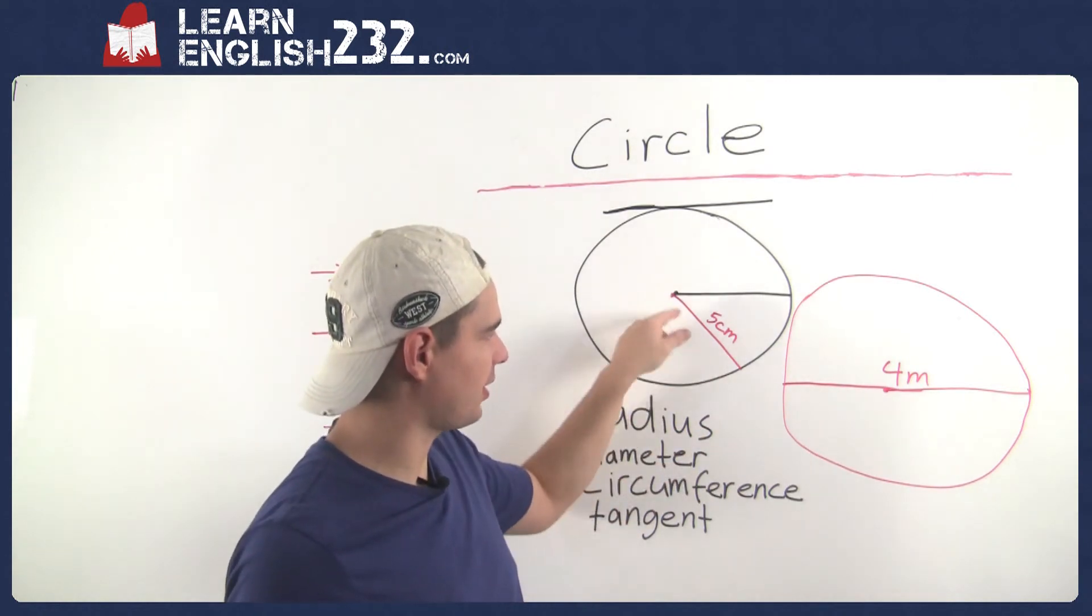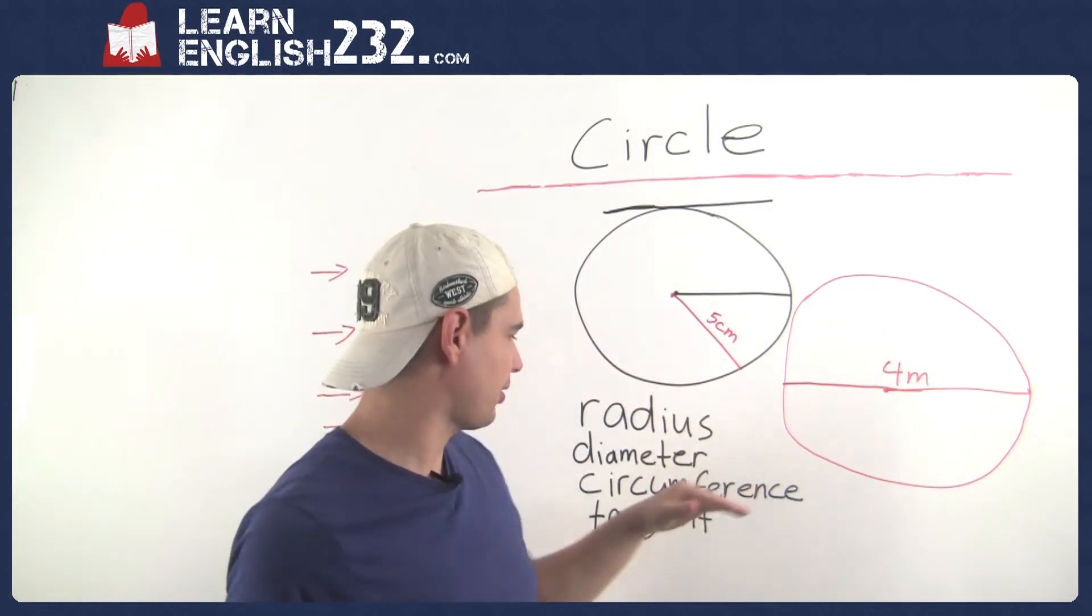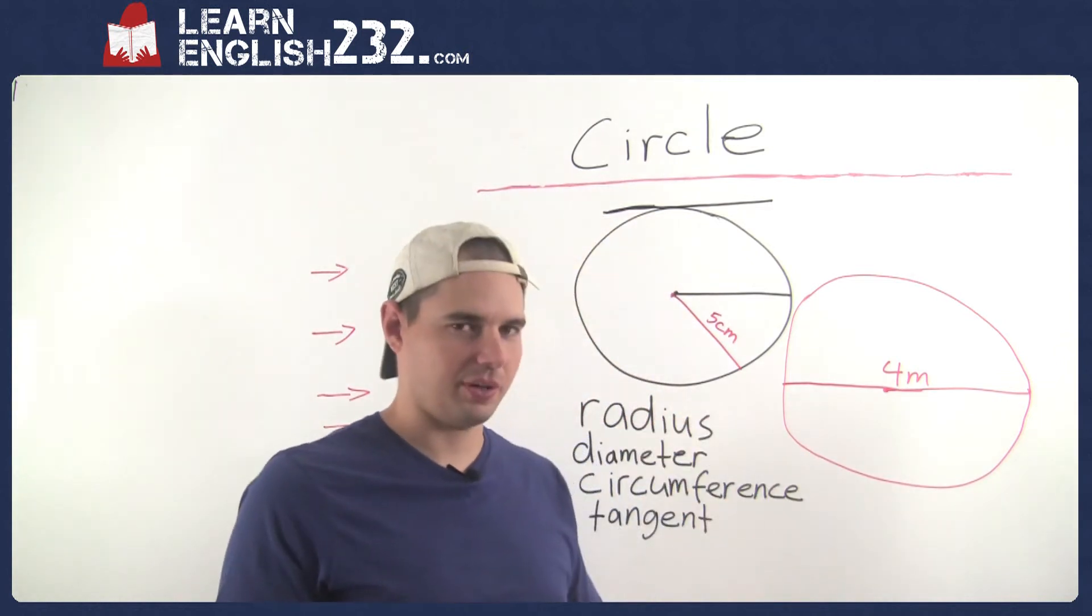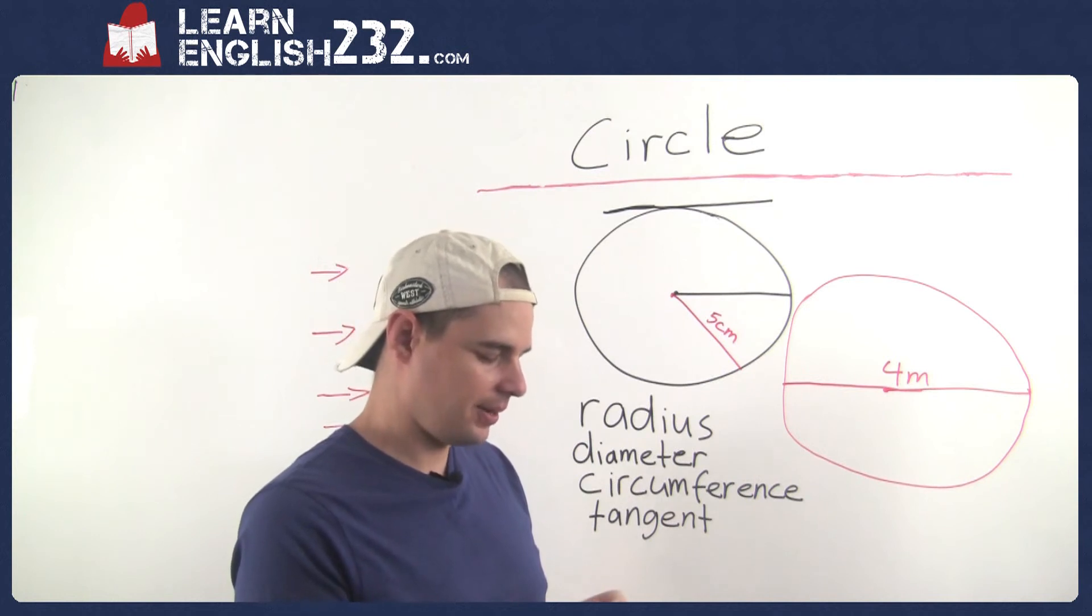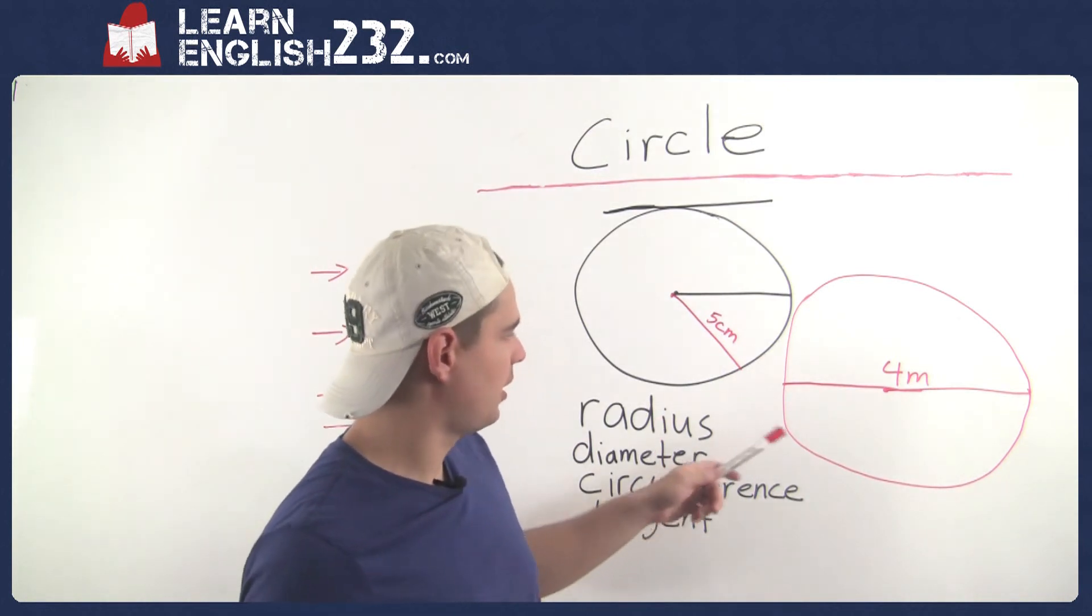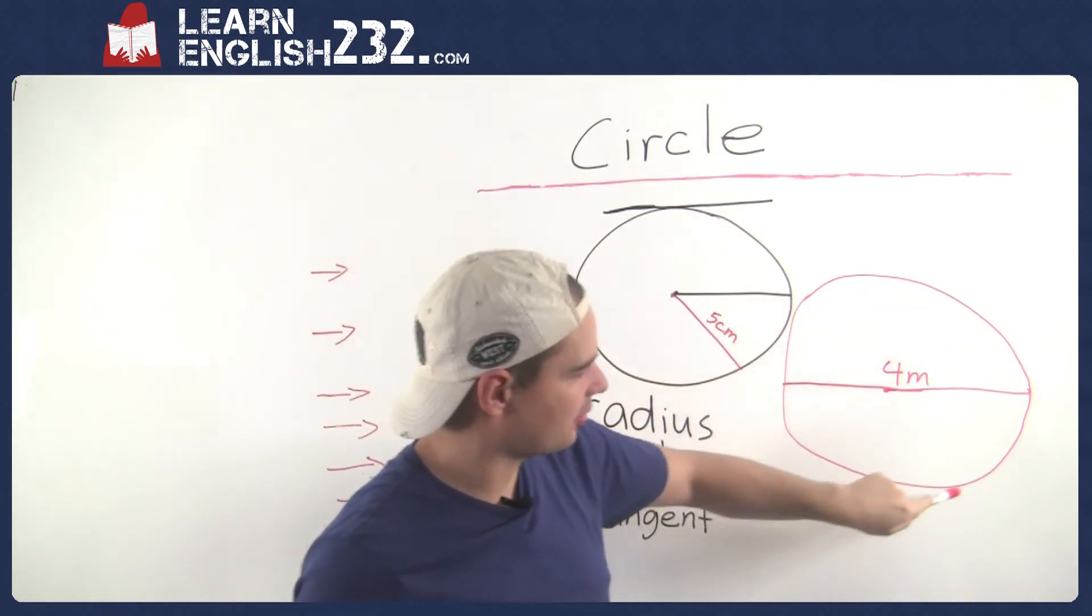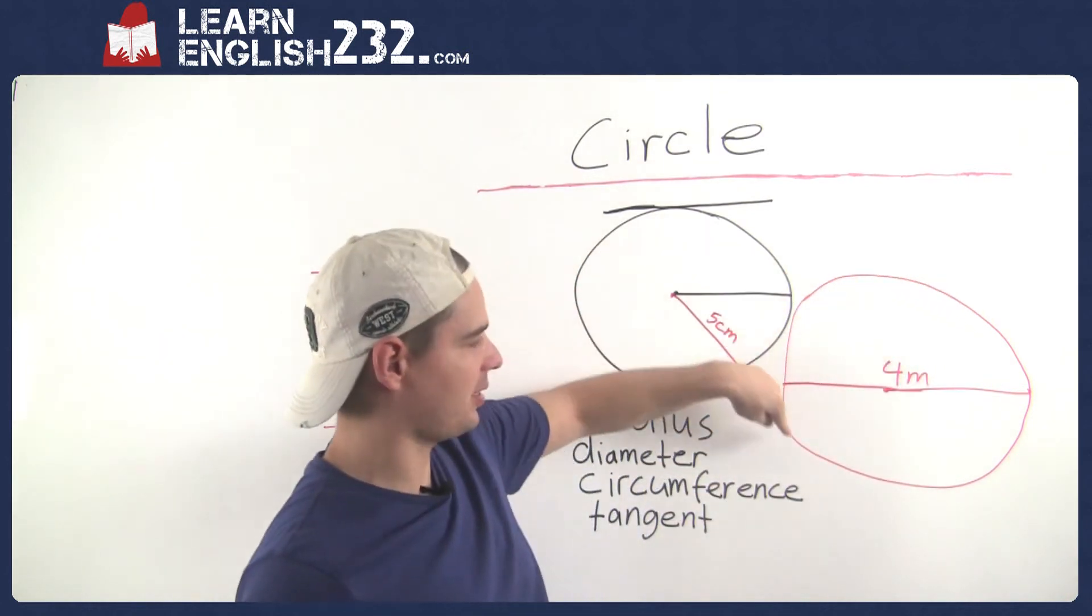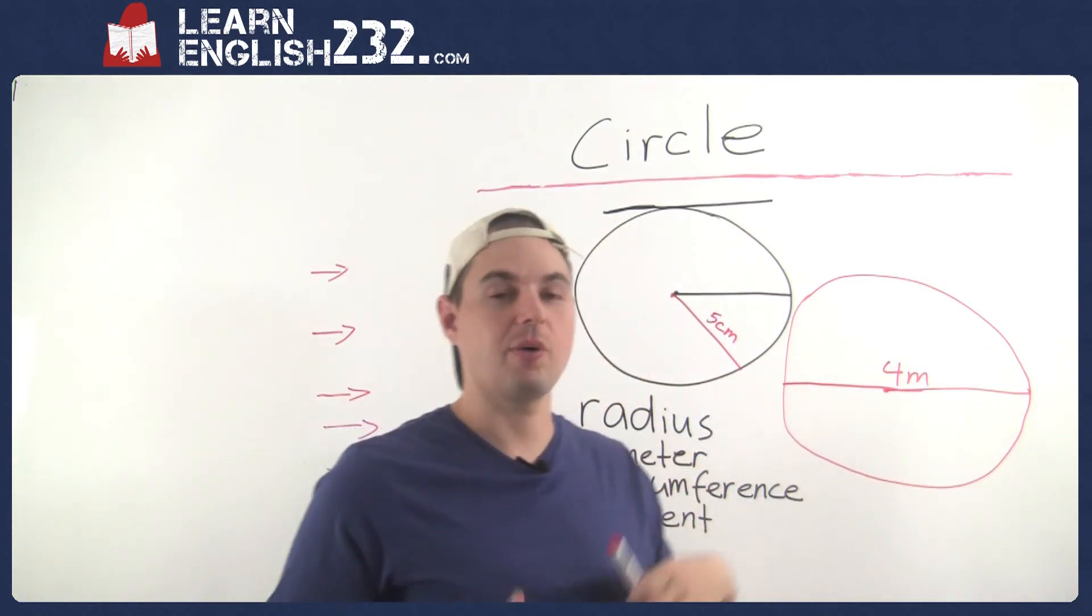So radius is from the center to any point on the outside. Diameter is straight across. Circumference - this is used less in spoken English, but if you ever hear it, it's necessary to know what it is. And this one's only used for circles, actually all these are. It's the distance around the entire circle. So anytime you need to measure the distance around the entire circle, you're talking about circumference. If you're going to go back all the way to when you're a little kid in math class, you probably remember...